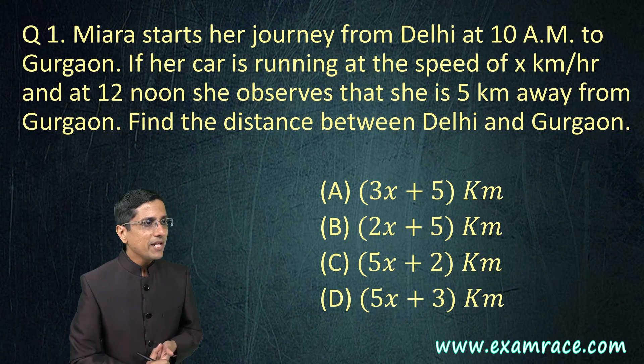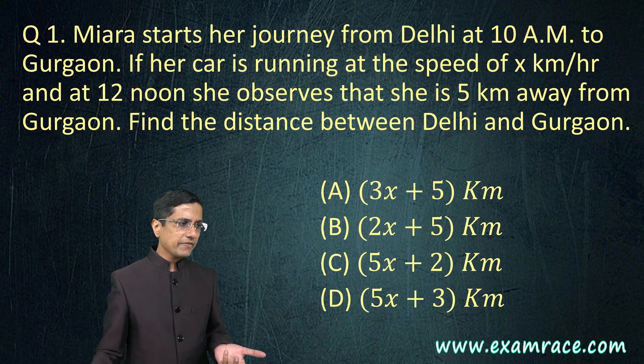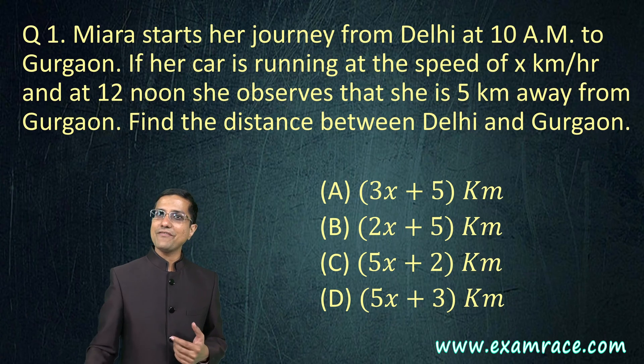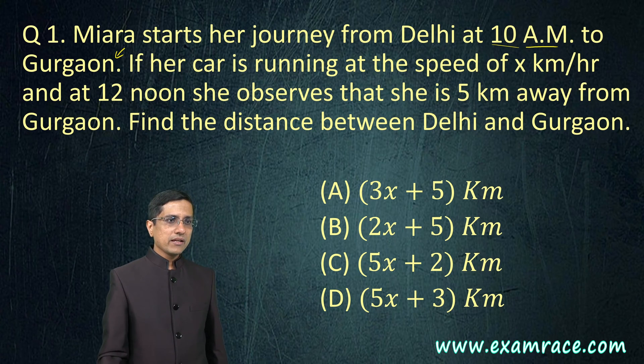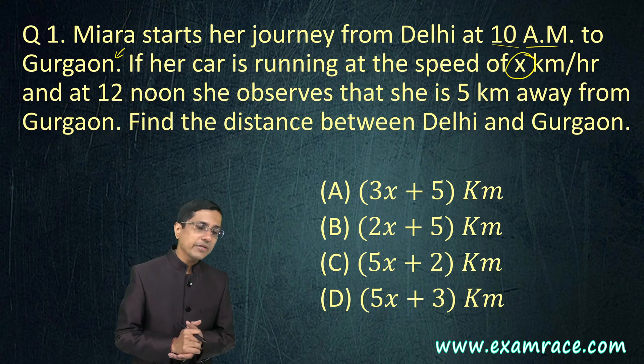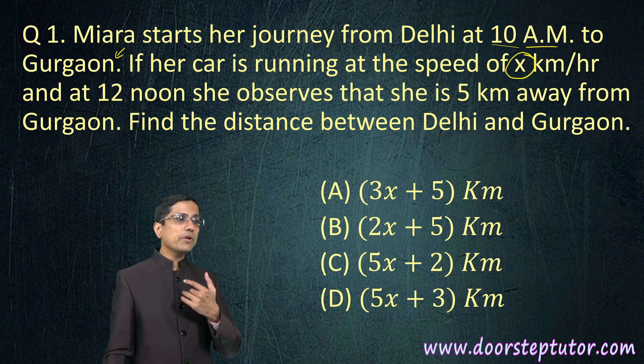Here is our first question. Miara starts her journey from Delhi at 10 a.m. This is pretty simple, we can surely appreciate it. She leaves at 10 a.m. in the morning and goes to Gurgaon. The speed is X km per hour, we are not being given what the speed is. We need to find it out perhaps. And at 12 noon, she observed that she is 5 km away from Gurgaon.